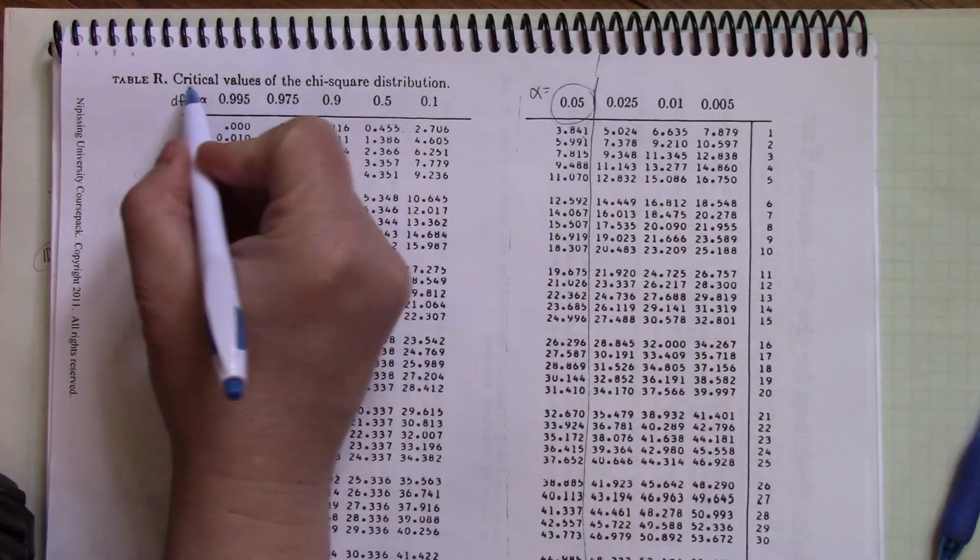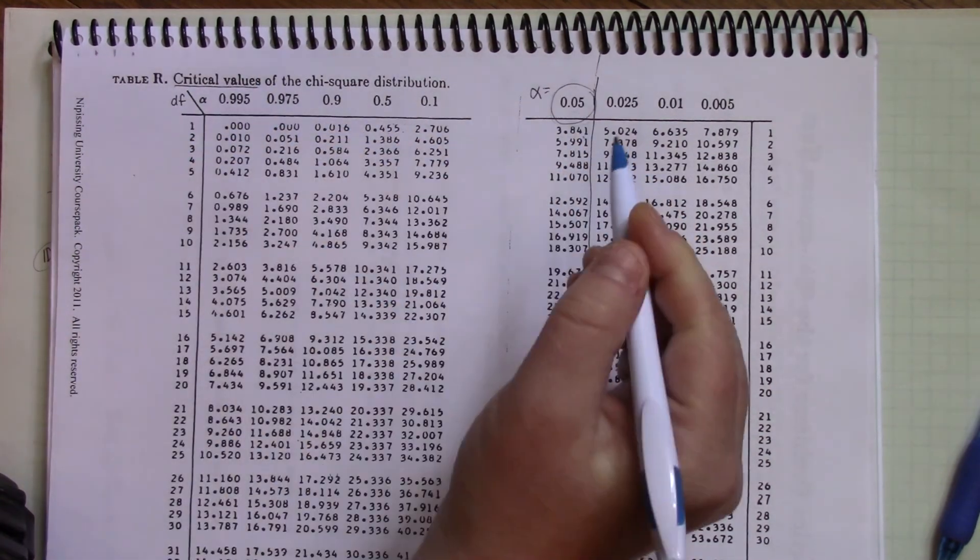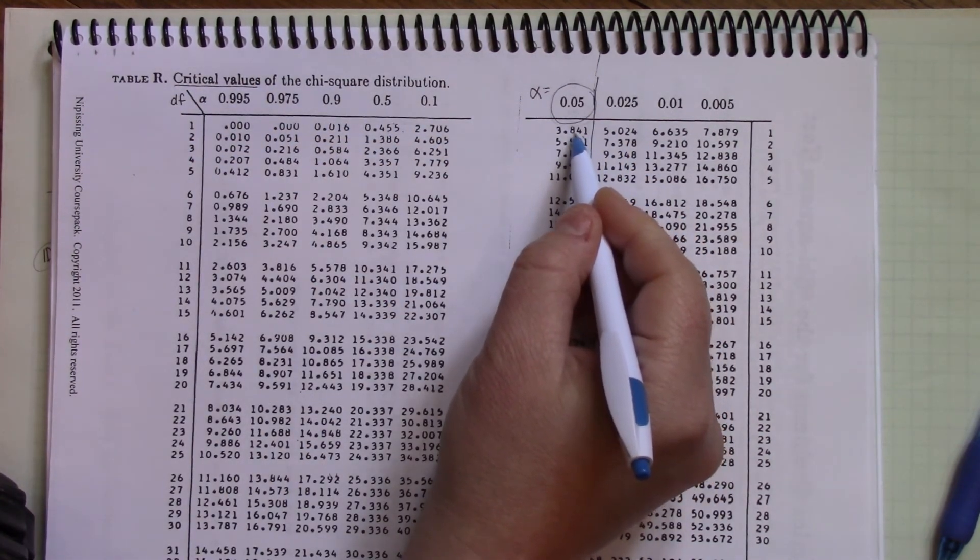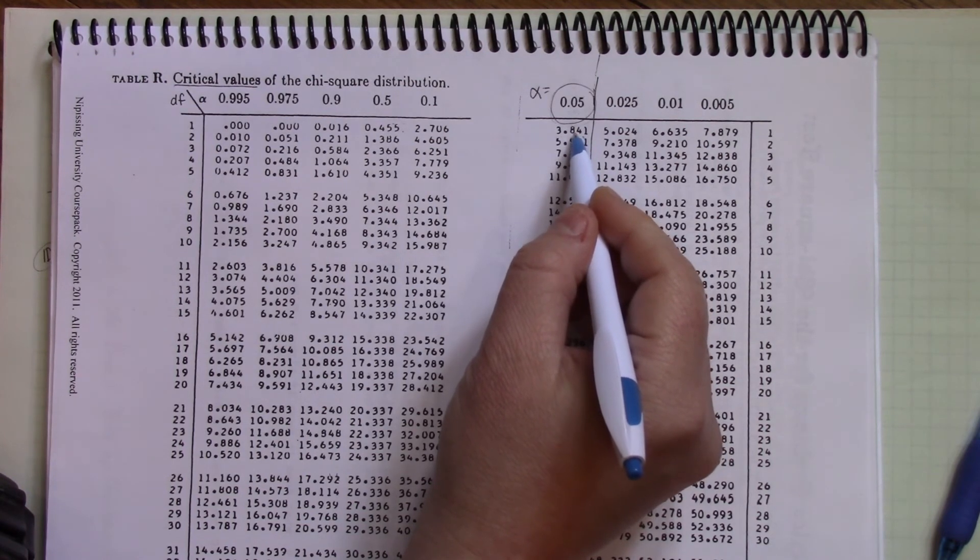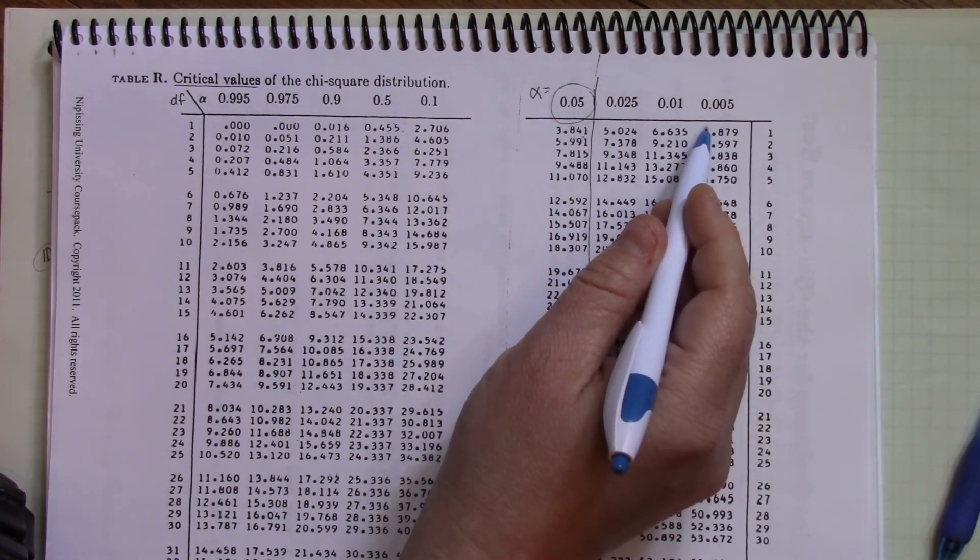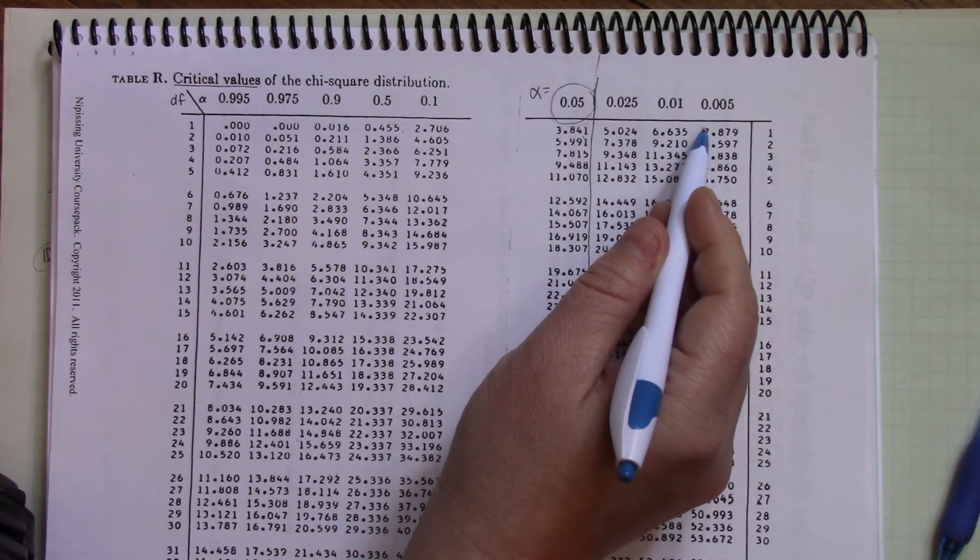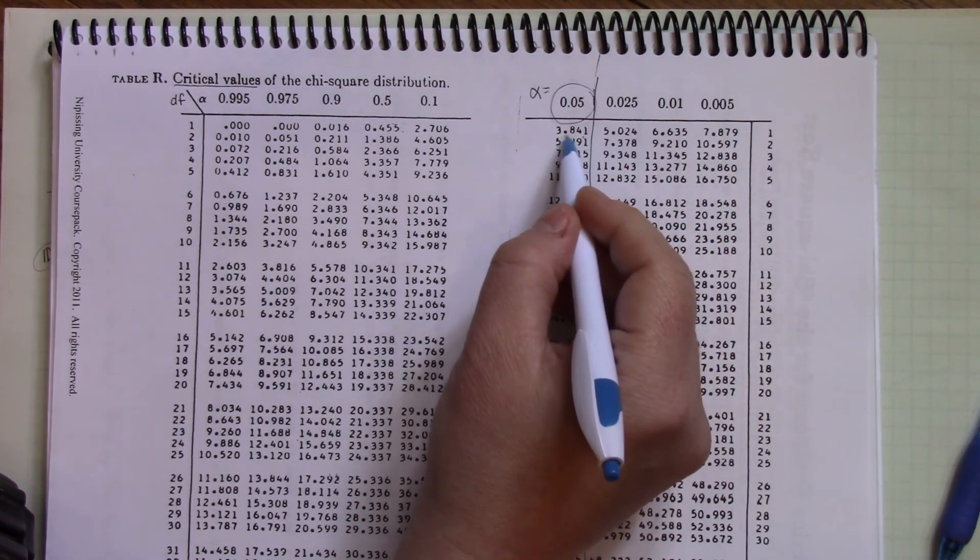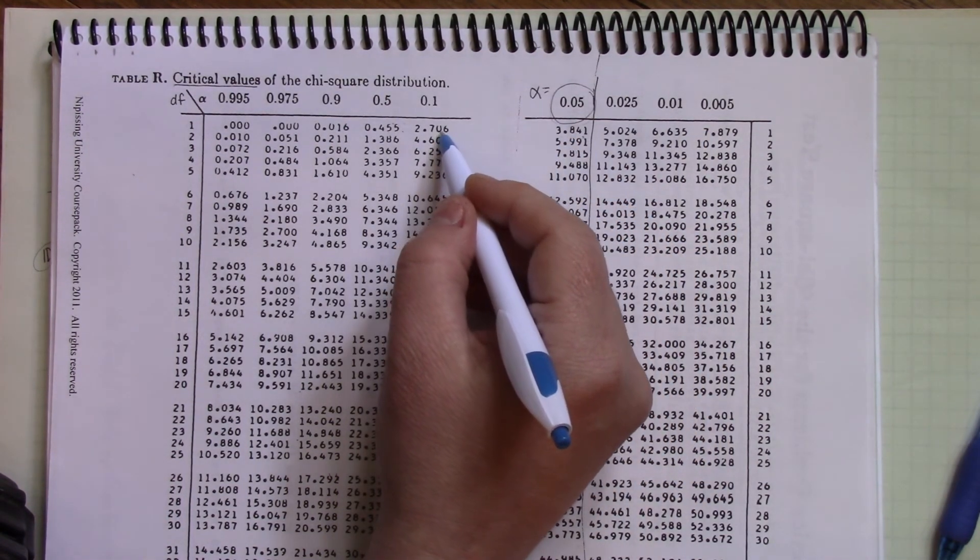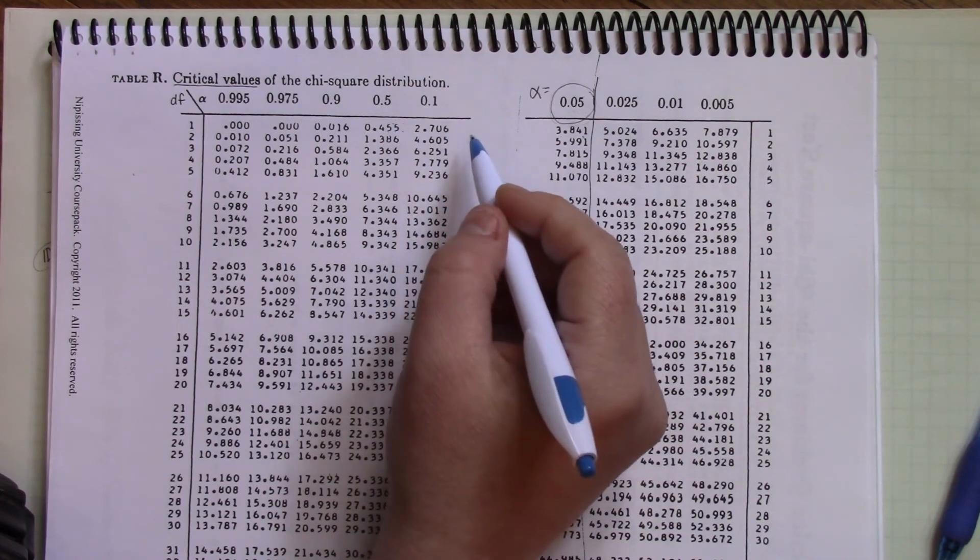Remember, this is our critical table of values, which means this is the critical cutoff point. If our calculated chi is greater than this, we reject our null hypothesis, and there is a difference. If our calculated chi-square is less than this, then we accept our null hypothesis, and there is no difference.